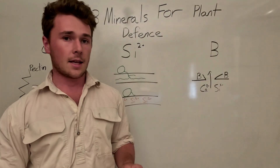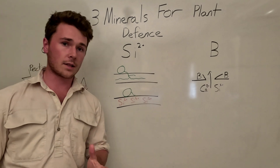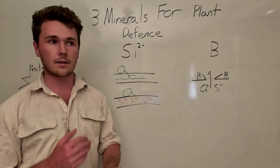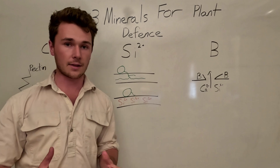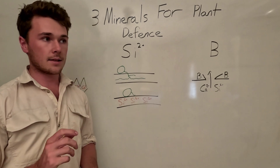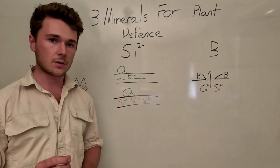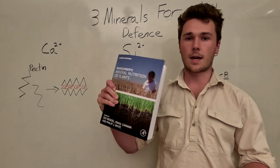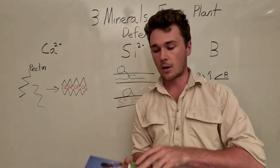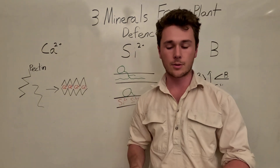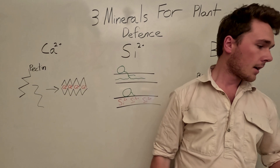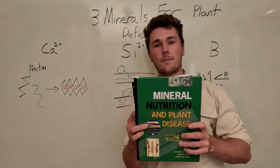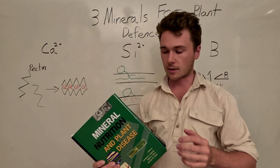Next is silicon. Silicon is a really interesting non-essential plant nutrient. It's non-essential, which means technically the plant doesn't have to have it, but it's very beneficial if it does. The study on silica is quite limited — I have two books here: 'Mineral Nutrition of Higher Plants,' a fantastic classic textbook I highly recommend, and 'The Great Green Book of Mineral Nutrition and Plant Diseases,' which is where I've drawn a lot of this information from.